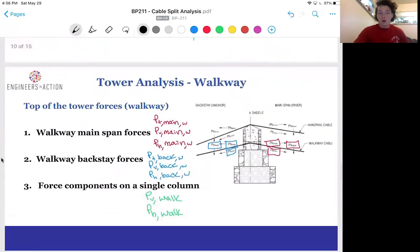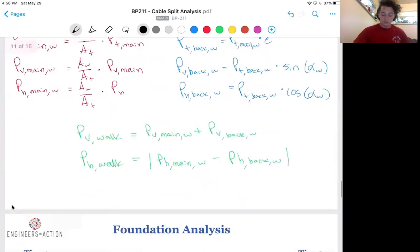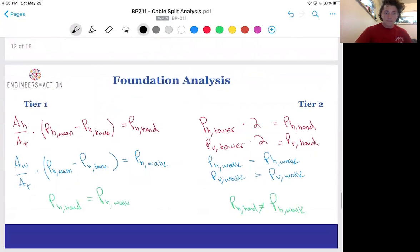Now for the walkway forces, we'll go through the same procedure: finding mainspan forces with cable area ratio, then backstay forces, then the components on a single column. And in this case, it's for the whole walkway, so we don't need to divide by two. At this point, we'll move on and revisit tower analysis in a future lecture to discuss the reinforced concrete design and checks of the tower itself.